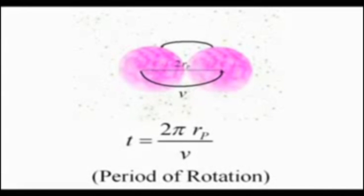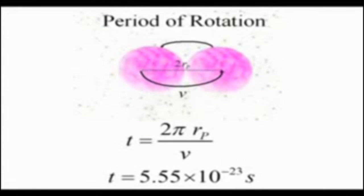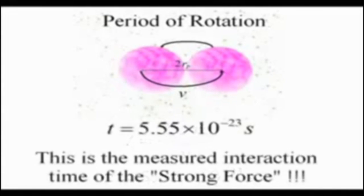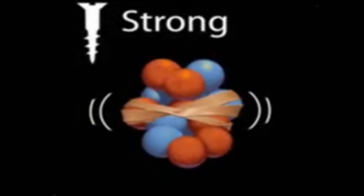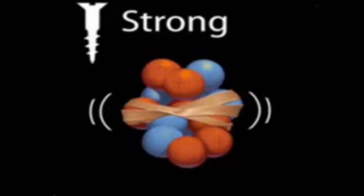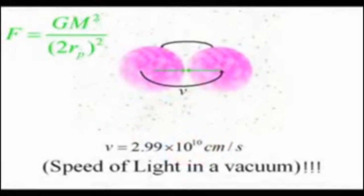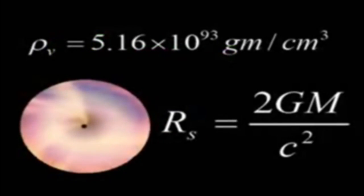If we then calculate the period of rotation of this system, we get 5.55 times 10 to the negative 23 seconds, which also happens to be the characteristic interaction time of the strong nuclear force. So apparently the strong force is actually quantum gravity at work due to the black hole nature of the Schwarzschild proton.